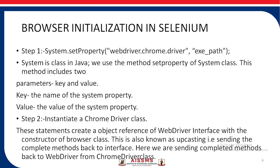For browser initiation in Selenium, we use system.setProperty with the key webdriver.chrome.exe and the path where the exe is stored. System is a class in Java and setProperty is its method. It has two parameters: key, which is the name of the system property, and value, which is the value of the system property.